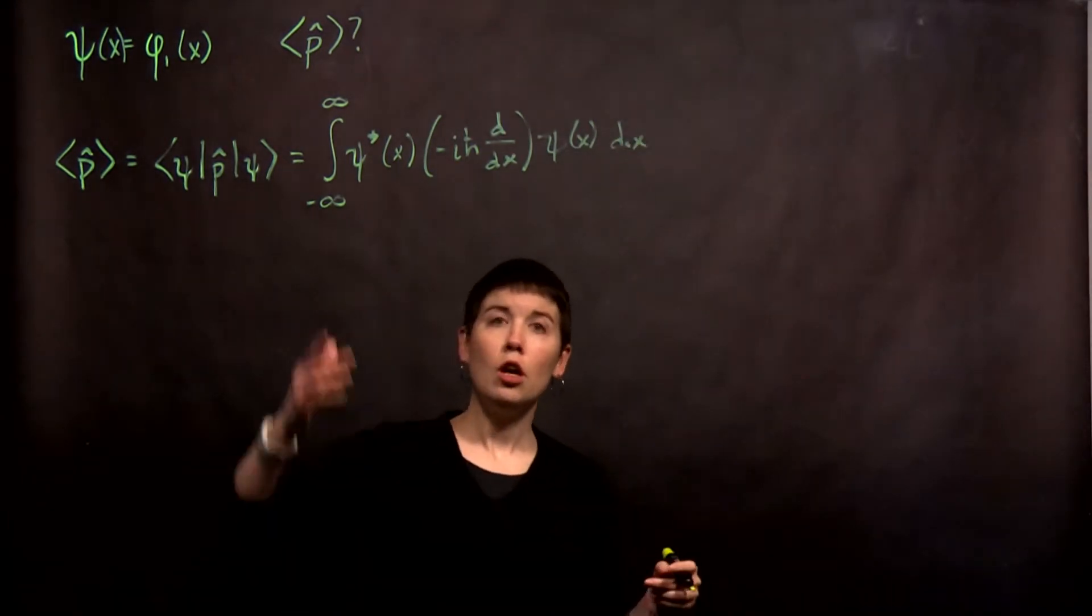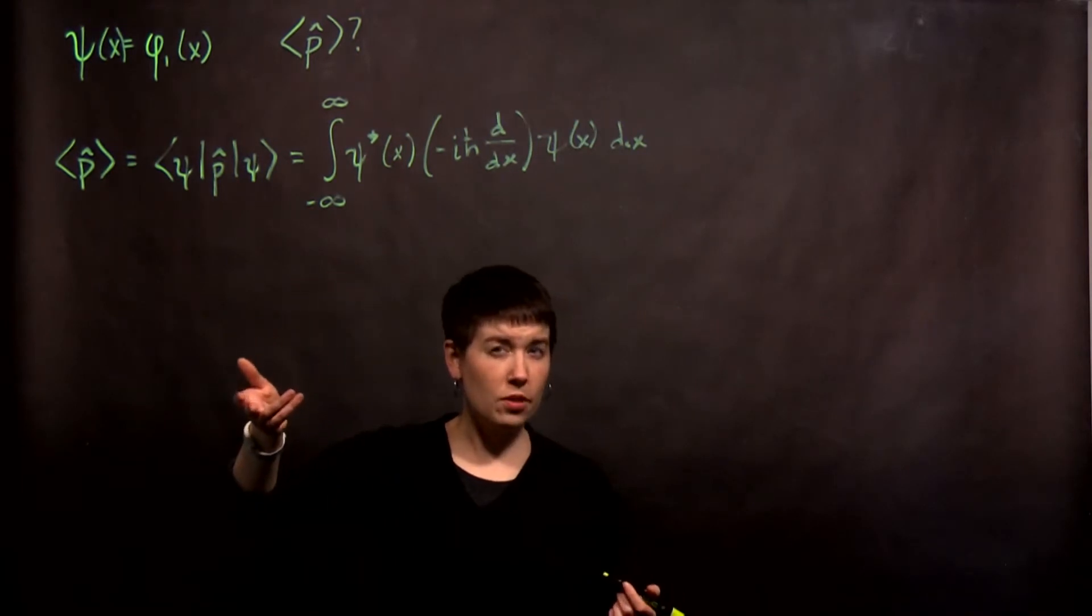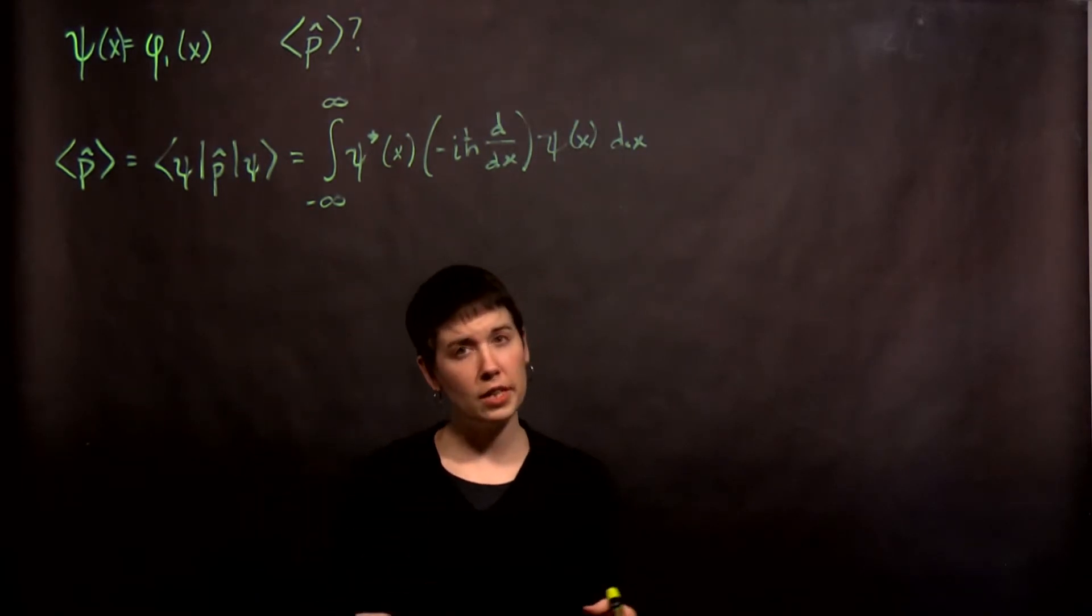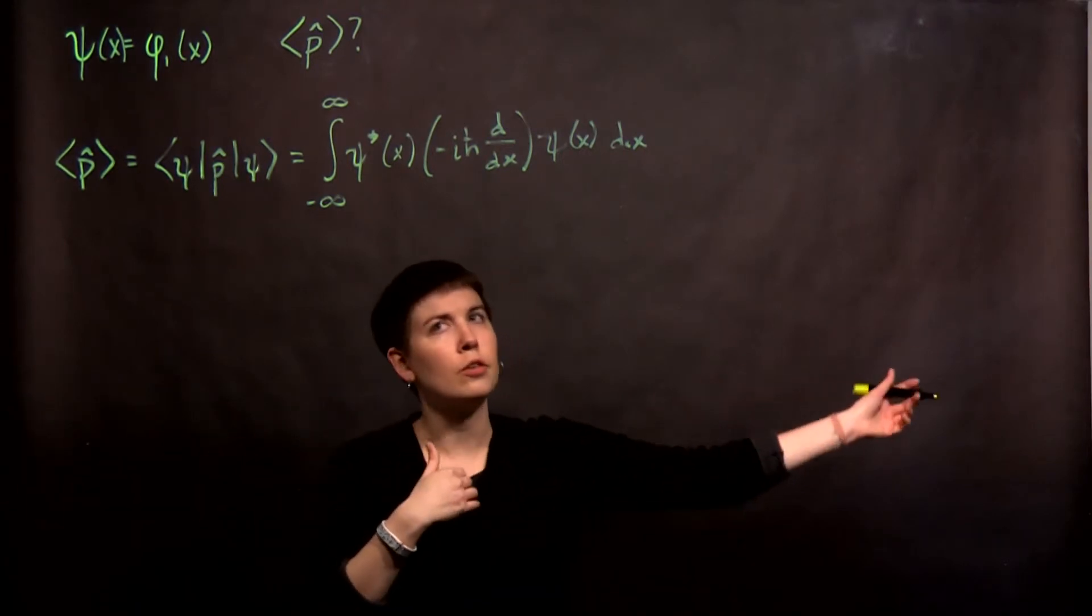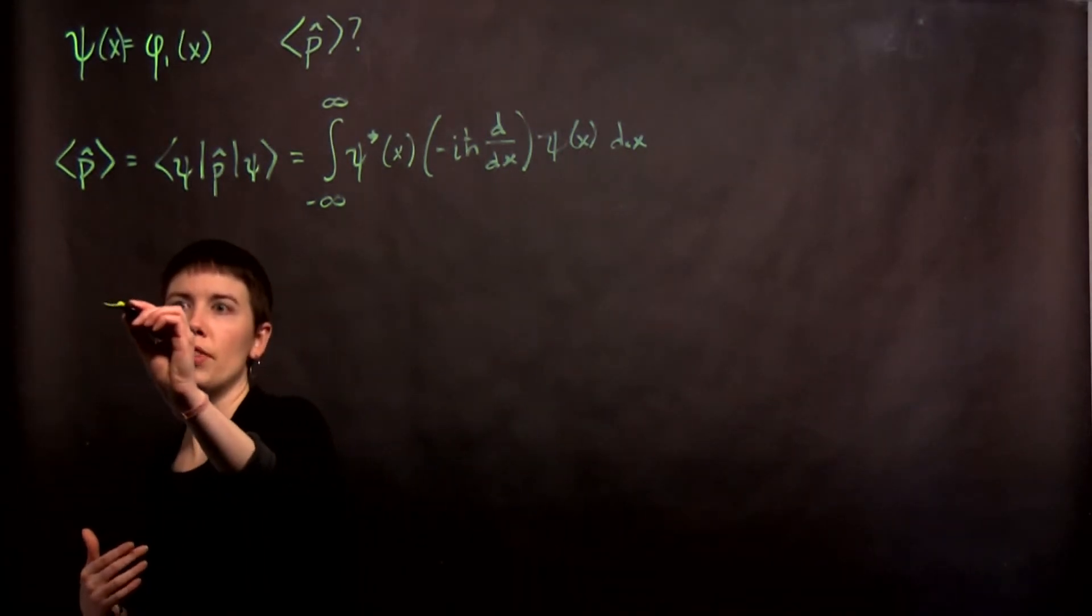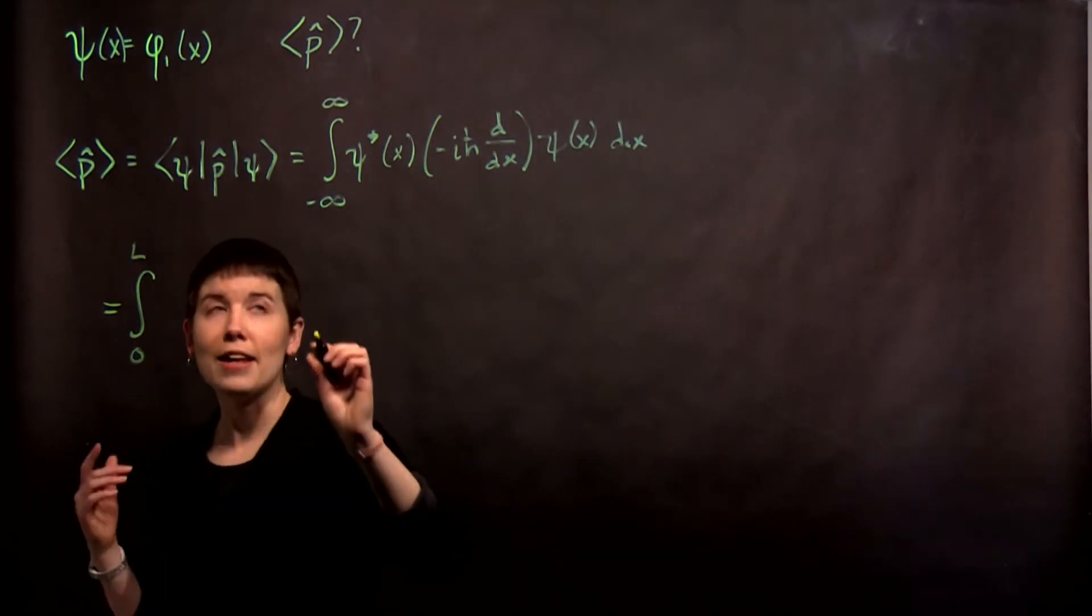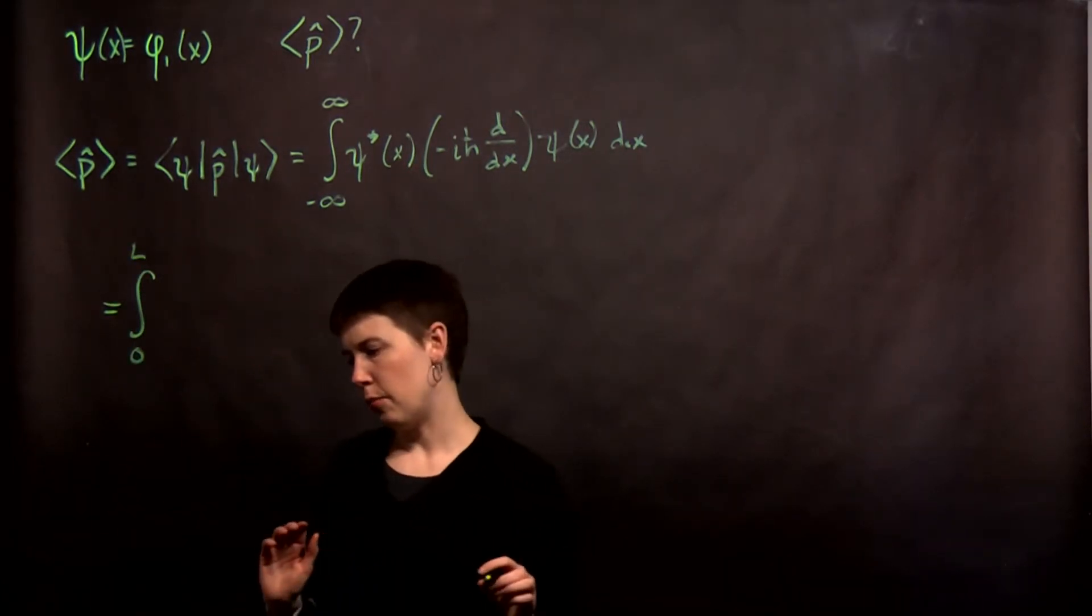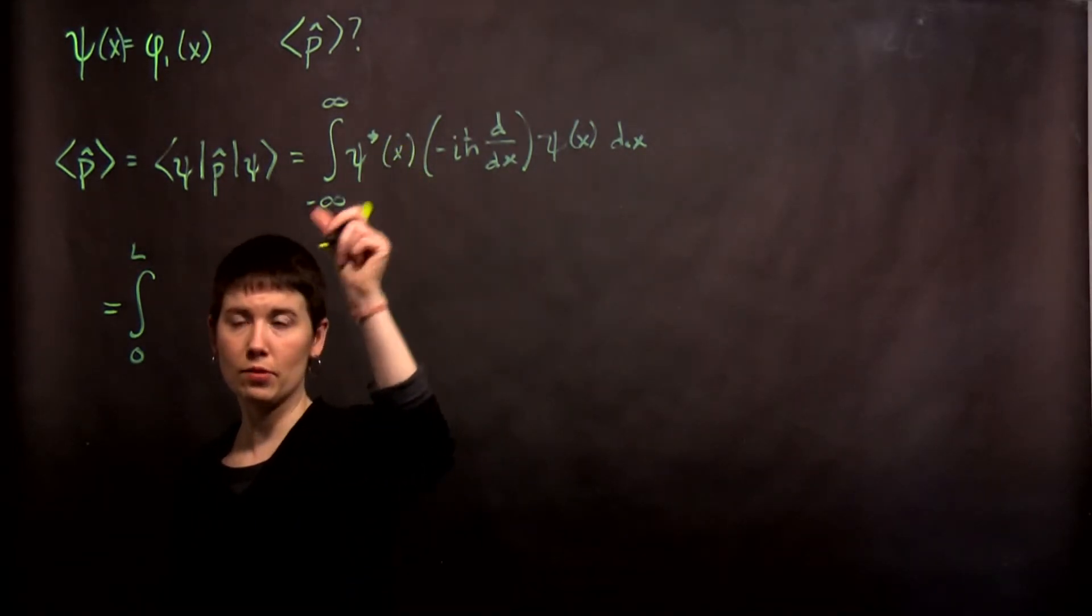Now, what we know about our state is that it's zero outside of the well. So we don't really have to integrate from negative infinity to infinity. We can imagine a region where our state is zero, a region where it's not zero, a region where it's zero. So our integral is going to become from zero to L. Let's first write this just as that state.